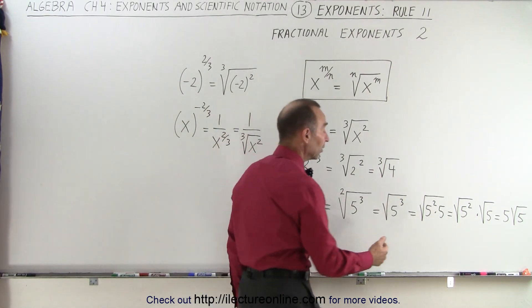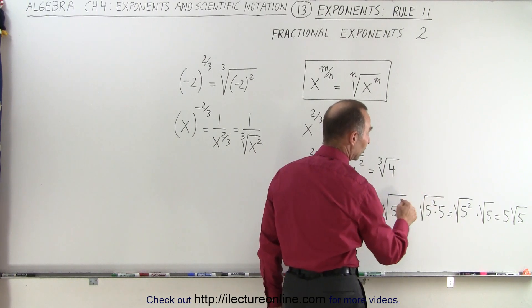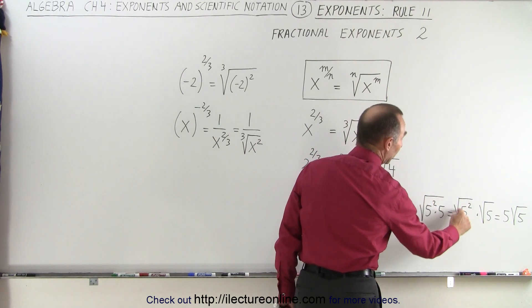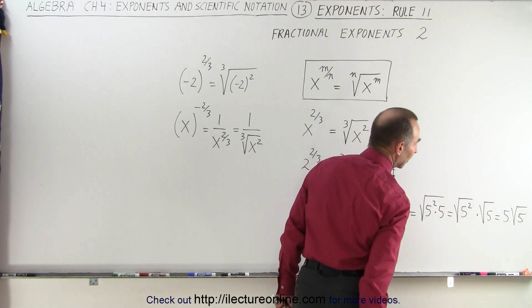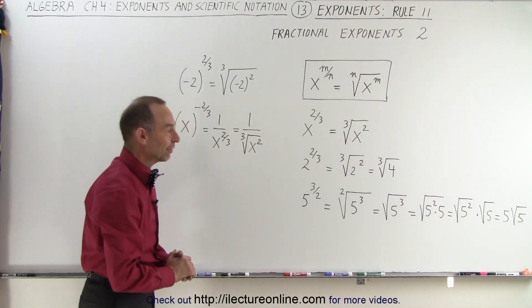And 5 cubed can be written as 5 squared times 5 to the first power, because 2 plus 1 is still 3. And then we can separate the two radicals, and the square root of 5 squared is 5. And the square root of 5, well we can't do anything about that, so 5 times the square root of 5 is the final answer.